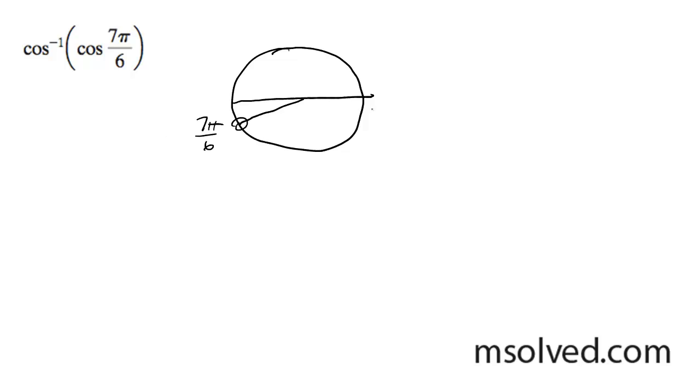But our limits on our inverse of the cosine are going to be whatever's in here. Well, whatever that is, we can rewrite this as whatever the inverse cosine was is equal to whatever cosine of 7 pi over 6 is.